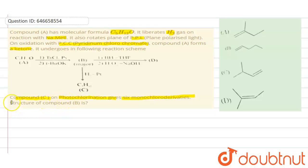Compound C on photochlorination gives six monochlorinated derivatives. We need to find out the structure of B. So before finding the structure of B, let's check out what must be the structure of A.